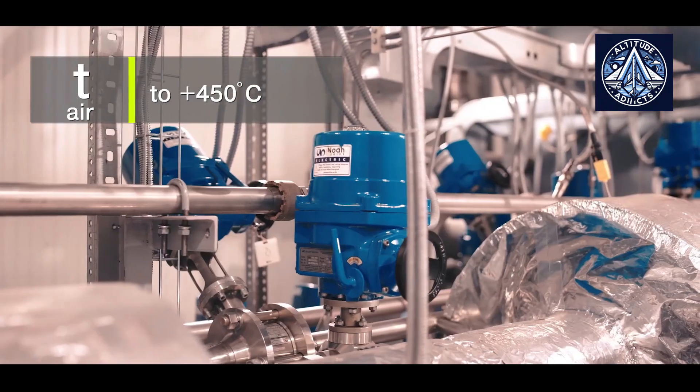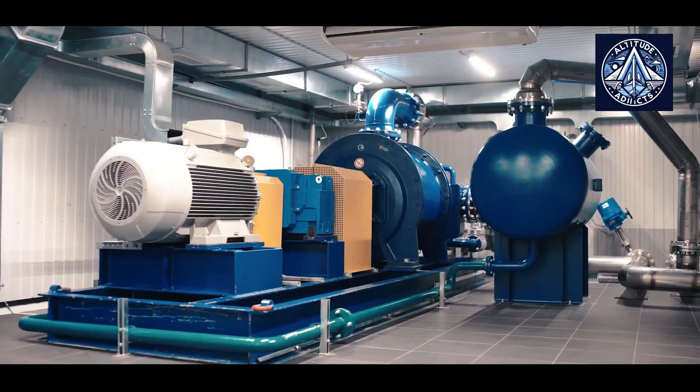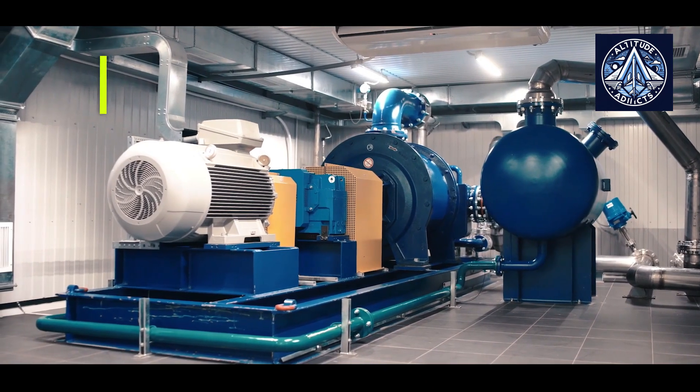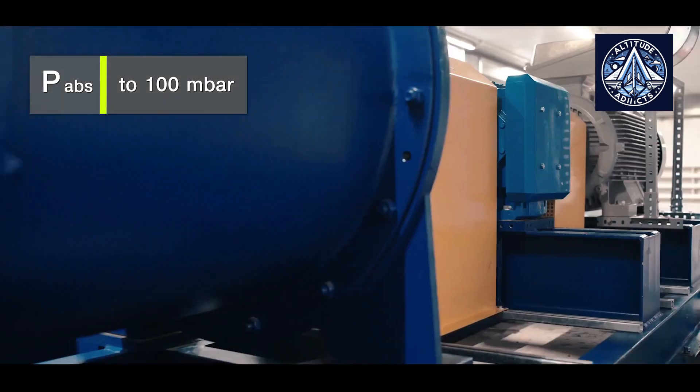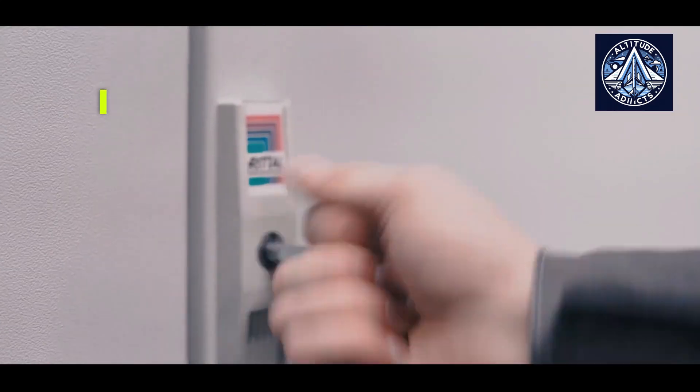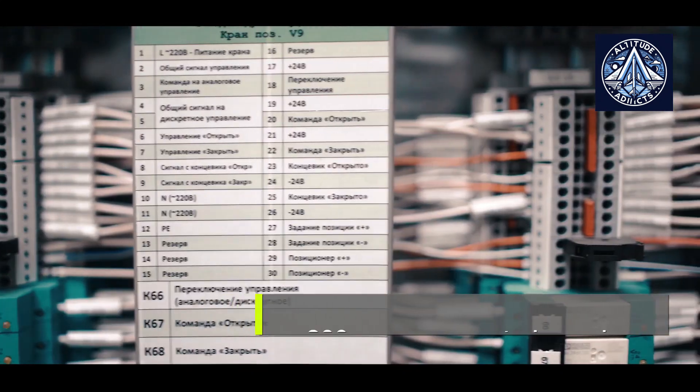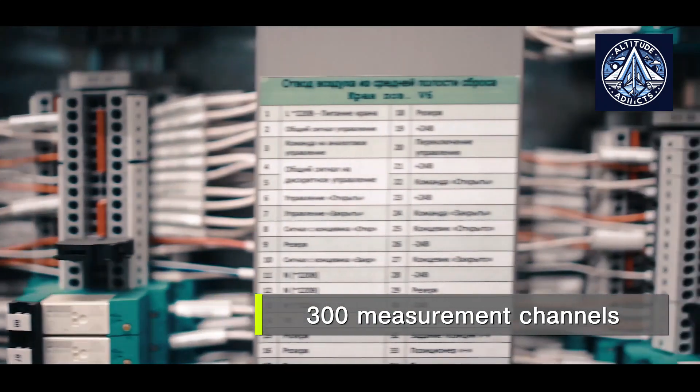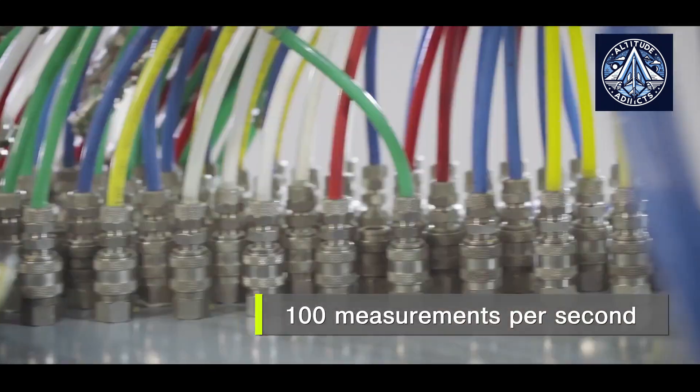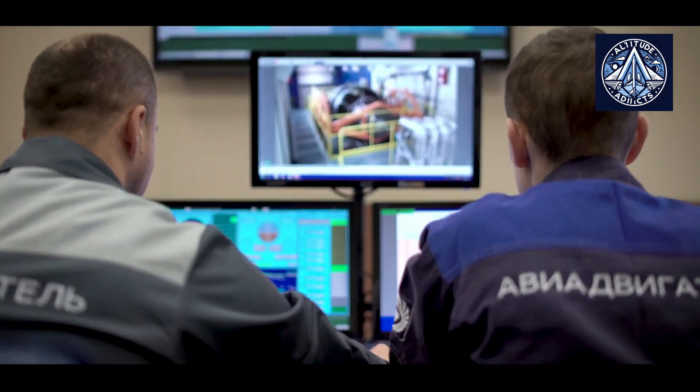The PD-8 engines are designed for SSJ-100 aircraft with two engines per plane. The PD-14 engines are intended for the MC-21-310 with two engines. The PS-90 engines are designed for the TU-214 and IL-96-300 with two and four engines, respectively.